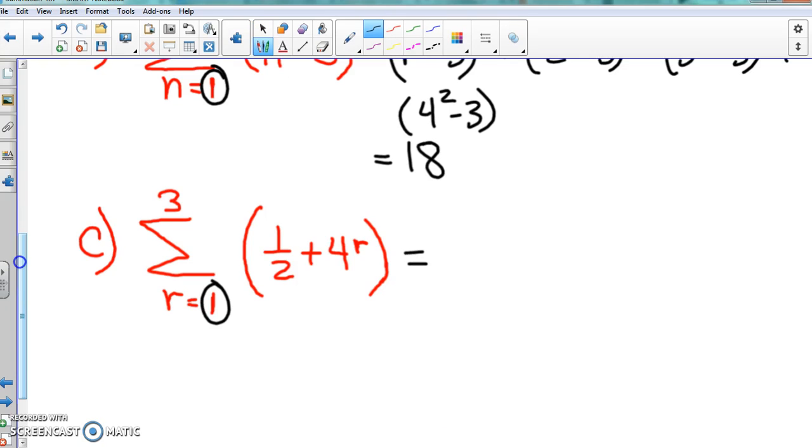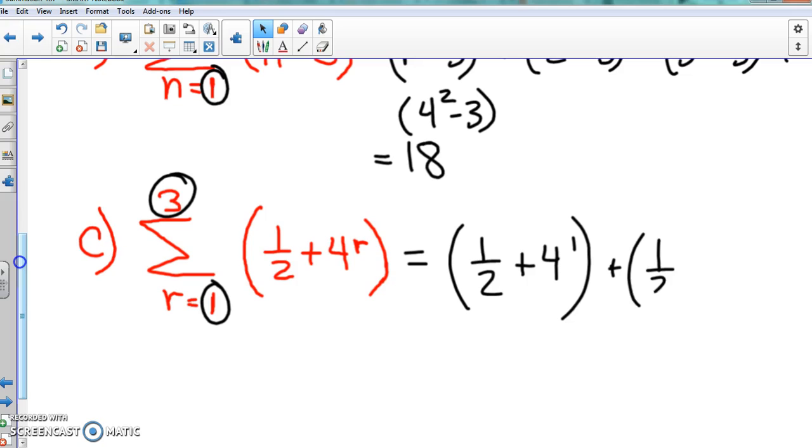Again, we start off with 1 and we end with 3. And this is 1 half plus 4 to the R power. It's an exponent. R is an exponent. Again, the only thing that changes is the exponent. Or the variable. The only thing that changes is the variable. So we start with 1. 1 half plus 4 to the 1 power. And then we go to 2. And we go to 3.